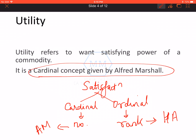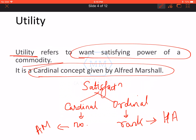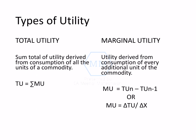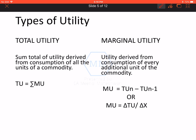So in this chapter, the concept covered is the Cardinal Concept given by Alfred Marshall. The first thing Alfred Marshall defined is Utility. Utility refers to the want-satisfying power of a commodity — meaning, however much satisfaction I get from consuming any commodity, if I can measure it in number form, that is called Utility.